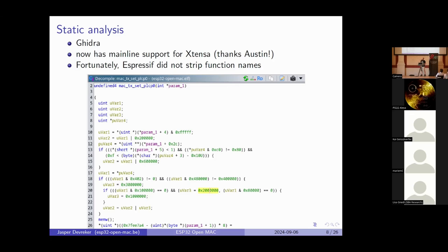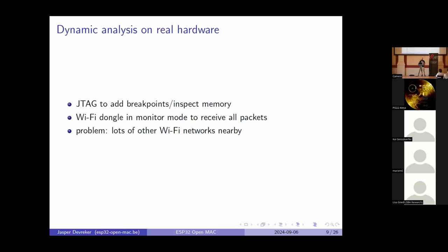As you can see on the slide, this is basically what code you would get out of it. It writes to raw memory, because that's how the Wi-Fi interaction works.